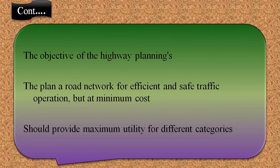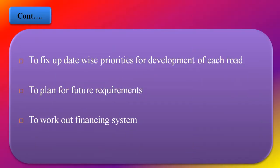Without proper planning, you can get more and more problems. The next objective is to arrive at a road system and the length of different categories of road which could provide maximum utility within the available resources during the planned period under consideration. We need to fix up date-wise priorities for development of each road and link, based on utility as the main criteria for the road development program.